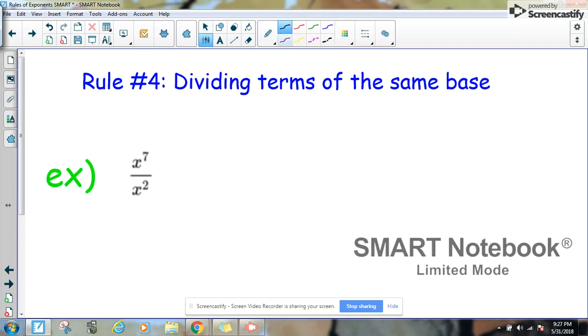Here's an example. So in this example, we've got x to the 7th divided by x to the 2nd, and since the base is the same, it's x in both of them, we can simply subtract the exponents. This is going to equal x to the 7 minus 2, which is going to simply equal x to the 5th.